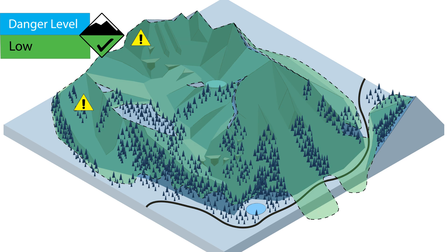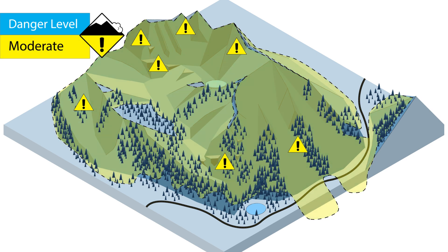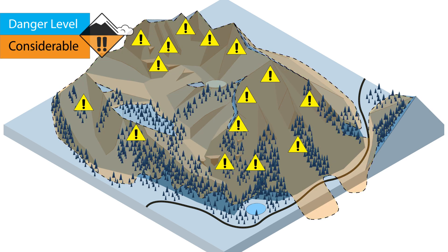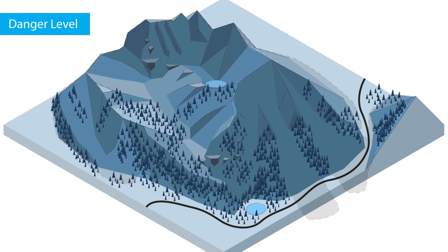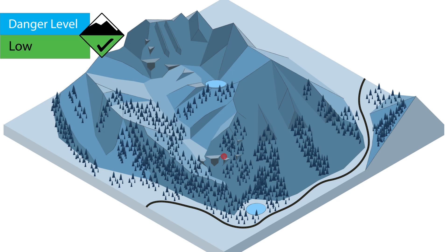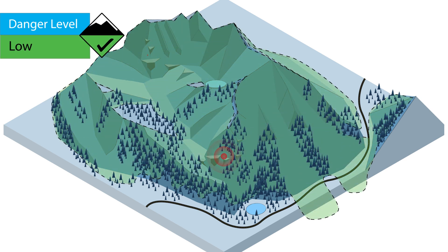In general, when conditions are more dangerous, the places you can safely go in the terrain become more limited. Low avalanche danger does not mean no danger, but under these conditions you can travel safely if you understand that there may be unstable snow on isolated features and in extreme terrain.